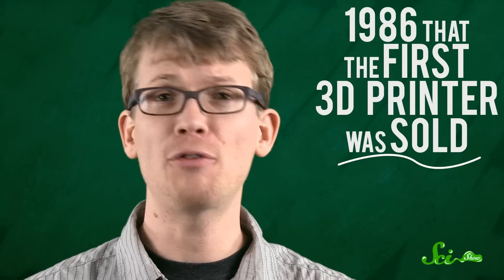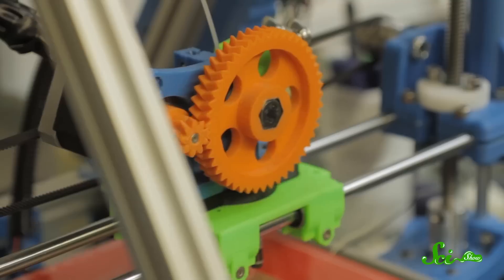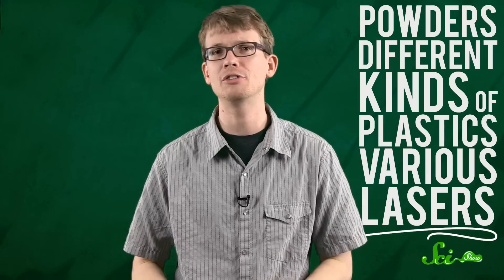But it was in 1986 that the first 3D printer was sold. As a stereolithography apparatus, or SLA, it was used to make models of machine parts and such from layers of liquid plastic that were cured with a UV laser. By the mid-1990s, other materials and methods were being used. They used powders of different kinds of plastics, various lasers. And while people saw a lot of potential in the technology, for a long time, the only real use anybody could find for it was making models.